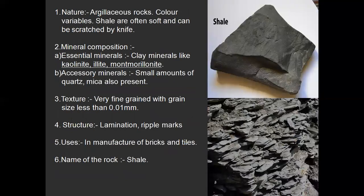Shale. It is an argillaceous rock — grain size less than 1 mm. Color is variable. Shales are often soft and can be scratched by a knife. Essential minerals are kaolinite, illite, and montmorillonite. Accessory minerals are quartz and mica. Texture is very fine, less than 0.01 mm. Structure: lamination, ripple marks. It is used in the manufacture of bricks and tiles.